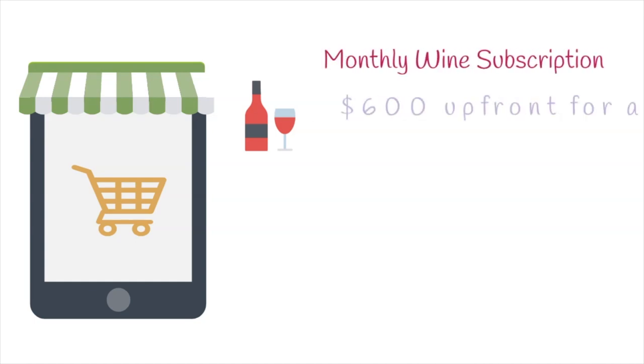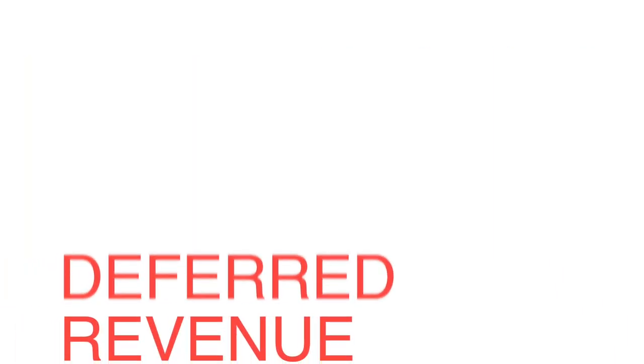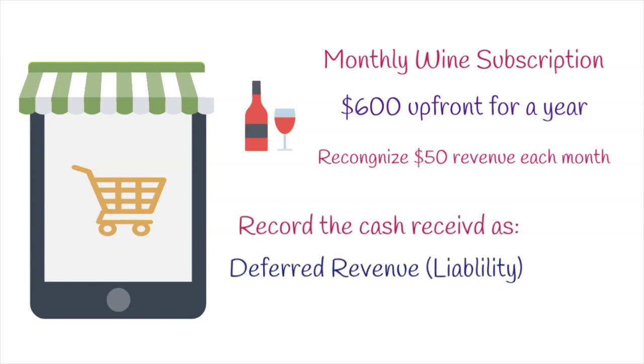Let's look at another example using a subscription business model. Imagine you own a wine store that runs a monthly wine club. Your customers pay you $600 up front for an annual subscription, and every month you send them three bottles of wine. You would only recognize $50 of revenue each month. Just because a customer paid you $600 doesn't mean you've earned the whole $600 — if you had to cancel their subscription early, you'd have to refund their money. This is the concept of deferred revenue, also known as unearned revenue.